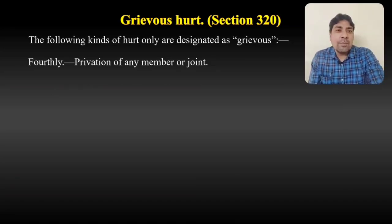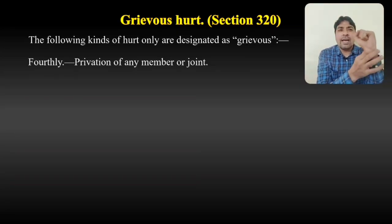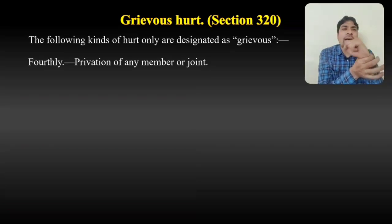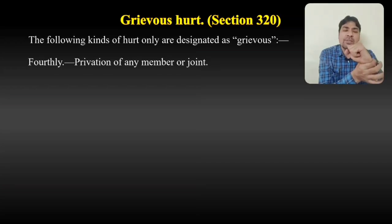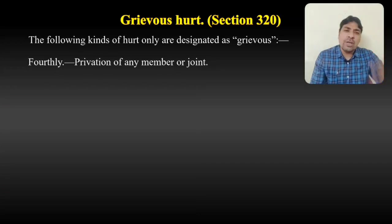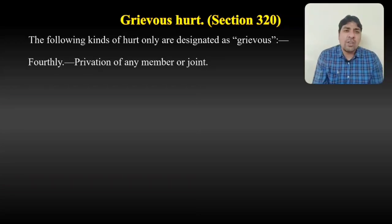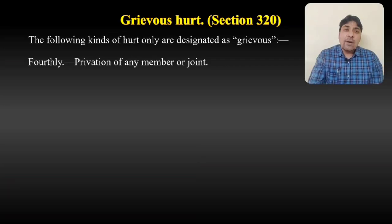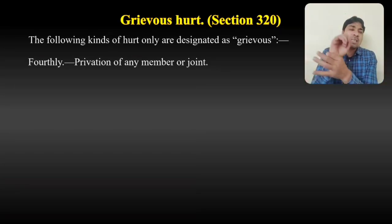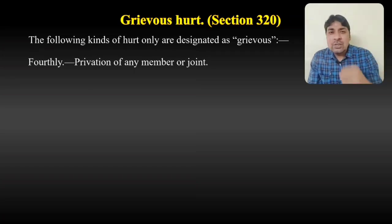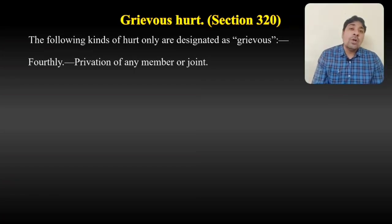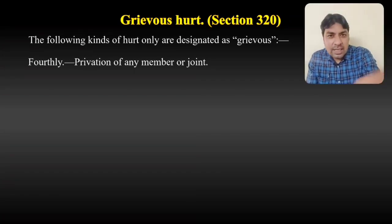The fourth type is privation of any member or joint. For example, if someone breaks a wrist joint, knee joint, ankle joint, elbow joint — whatever it may be — and causes such an injury that the joint is destroyed, then in that situation the person who caused such injury will be liable for grievous hurt.